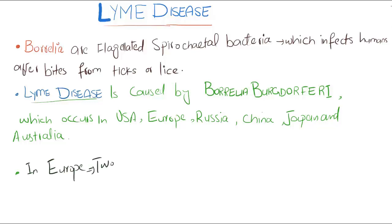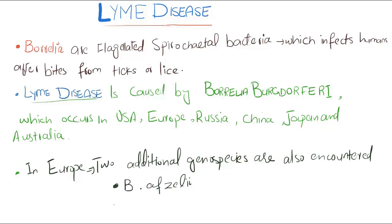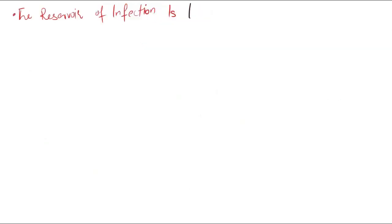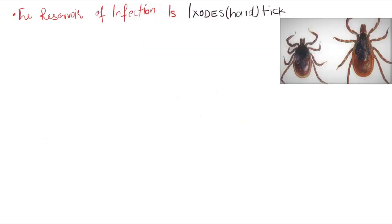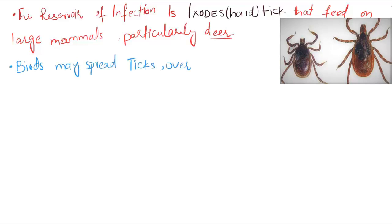In Europe, two additional geno-species are also encountered, named Borrelia afzelii and Borrelia garinii. The reservoir of infection is Ixodes ticks that feed on large mammals, particularly deer. Birds may spread ticks over a wide area.